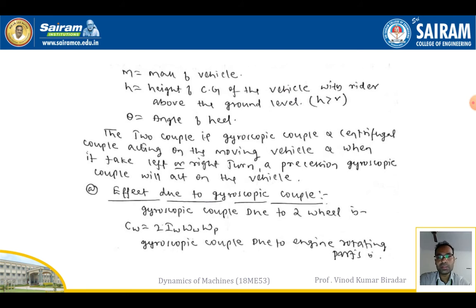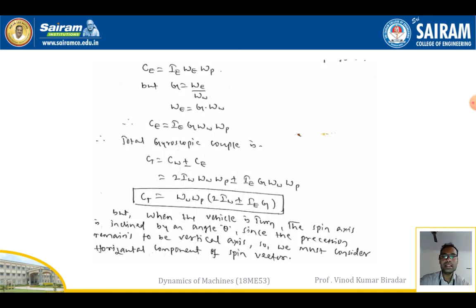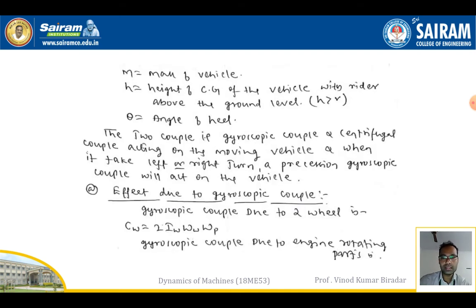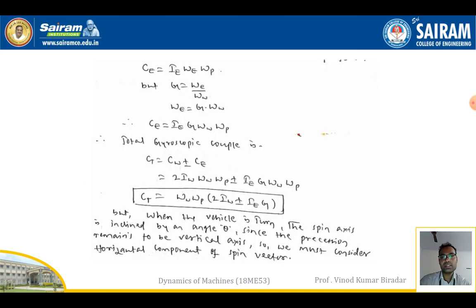The gyroscope couple due to the two wheels is: Cw = 2·Iw·ωw·ωp, where there are two wheels so we take twice the gyroscope couple. Here Iw is the moment of inertia of the wheel, ωw is the angular speed of the wheel, and ωp is the angular velocity of precession. The gyroscope couple due to the engine rotating parts is: Ce = Ie·ωe·ωp.